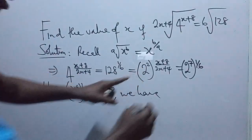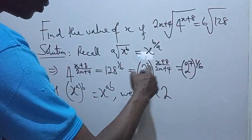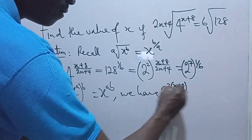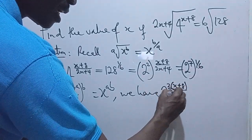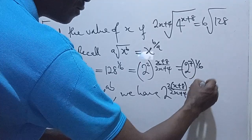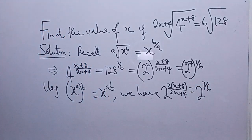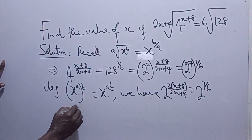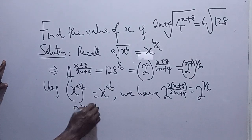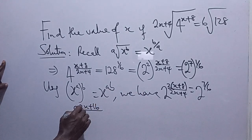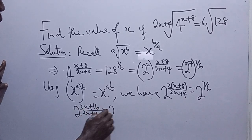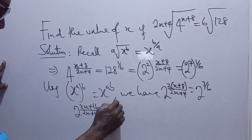We are working on this. 2 raised power 2 into x plus 8 all over 2x plus 4 is equal to 2 raised power 7 over 6. So expanding this, you have 2 raised power 2x plus 16 all over 2x plus 4 is equal to 2 raised power 7 over 6.